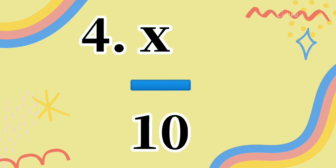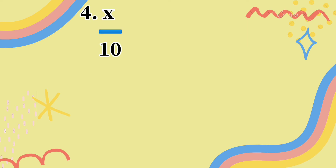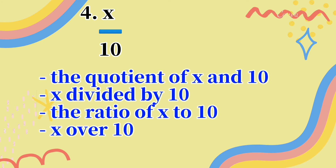Let's have number 4. In number 4, we didn't use the obelus symbol; instead, a horizontal line is used. When there is a horizontal line, it indicates division. Using our division keywords, we can translate the expression as: the quotient of x and 10, x divided by 10, the ratio of x to 10, or x over 10.